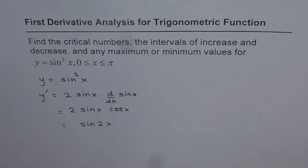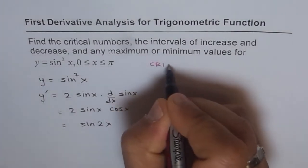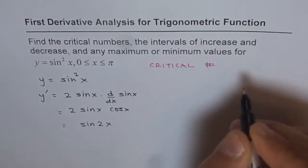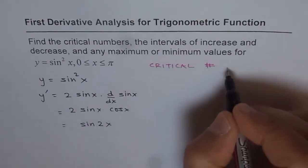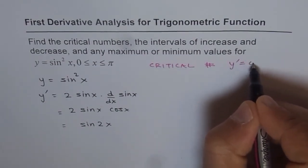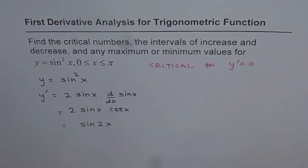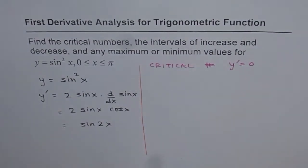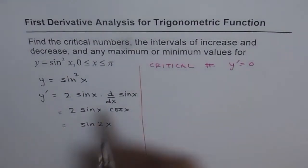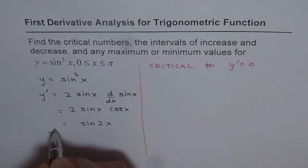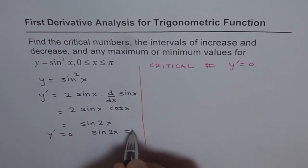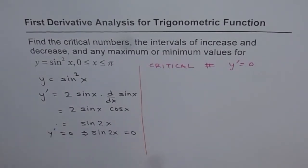To find critical numbers, the condition is that y-prime equals zero. So let's apply this condition. When is sin 2x equal to zero? When we set y-prime equals zero, it means sin 2x equals zero. That is what it implies, so we are setting sin 2x equal to zero.